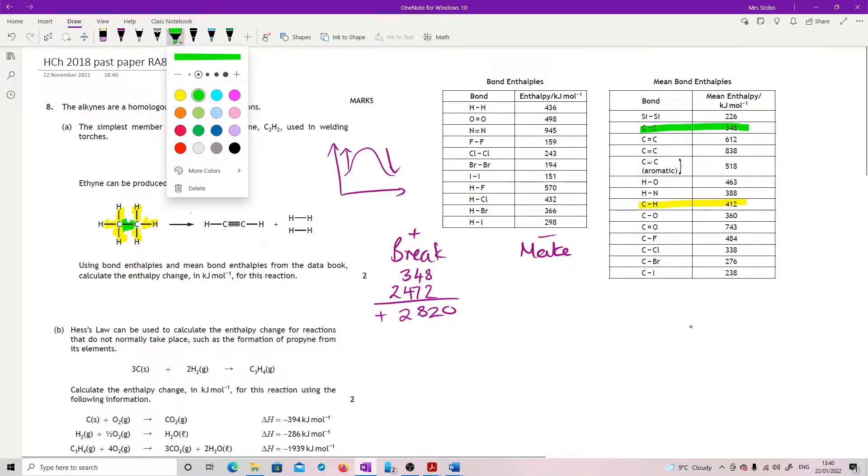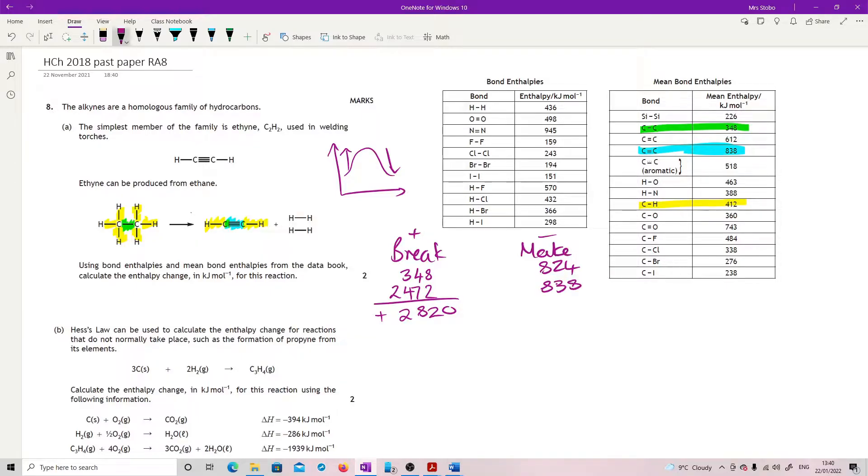Then my making. So I'm doing two carbon to hydrogens, which I've already got at 418. So two of them is 824. I have one carbon to carbon triple, different one than I had before. So that's a straight 828. And then I've got my hydrogens at the side there. So two times 436 is 872. Add all that up and that means I've got minus 2534. Add those two things together, gives me my final answer at plus 286 kilojoules per mole.